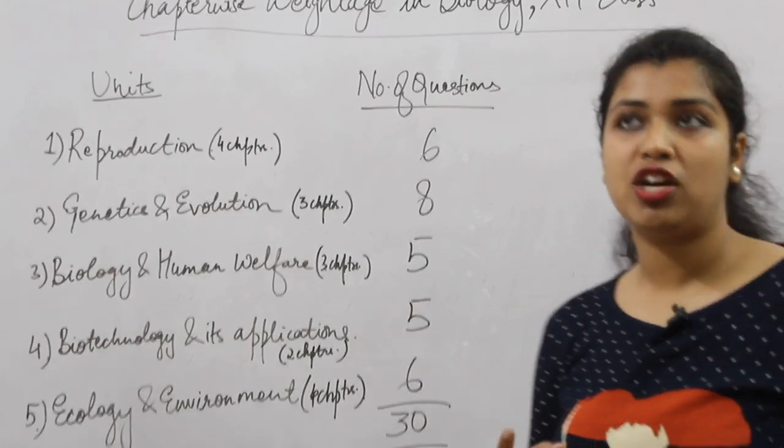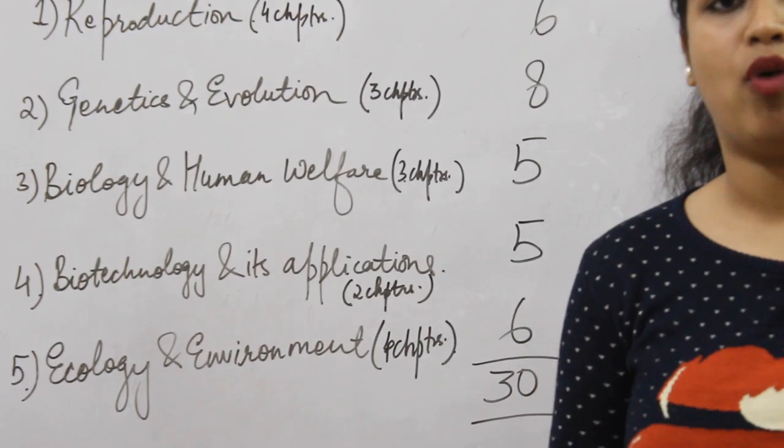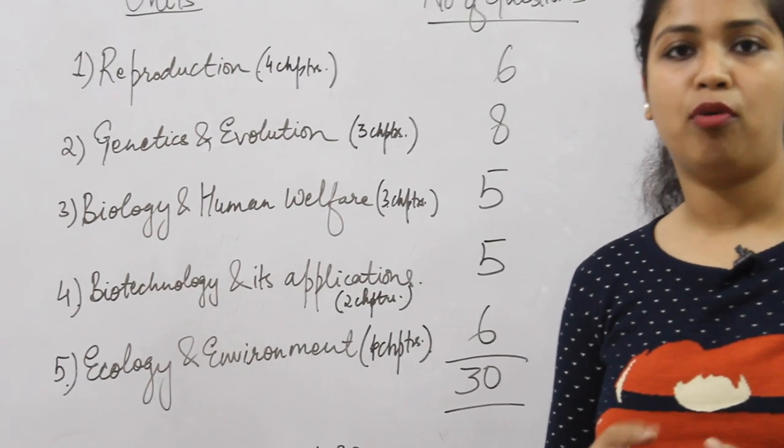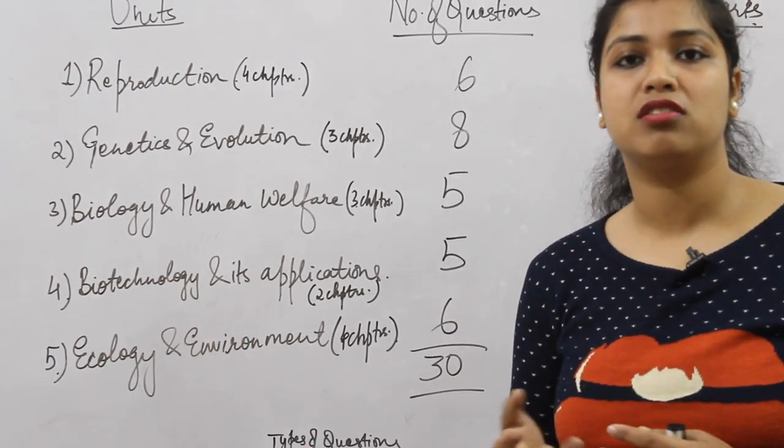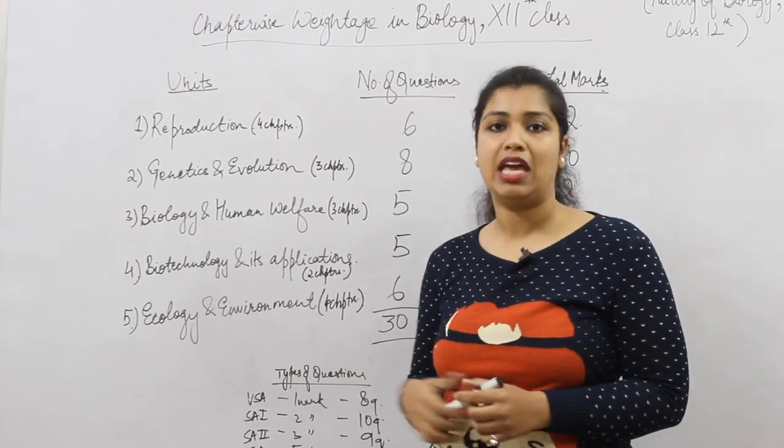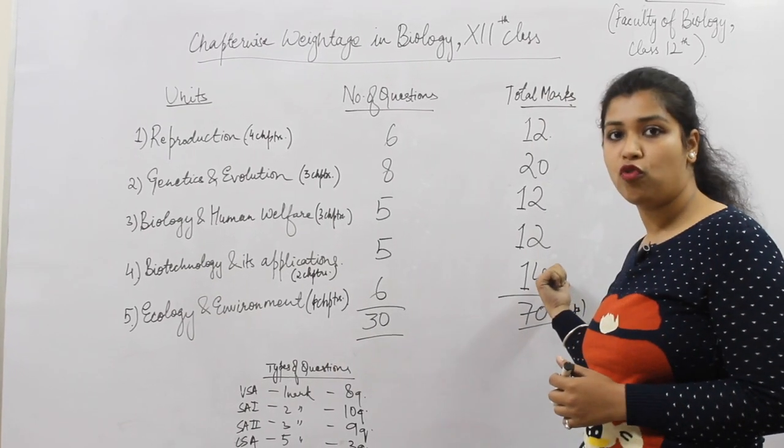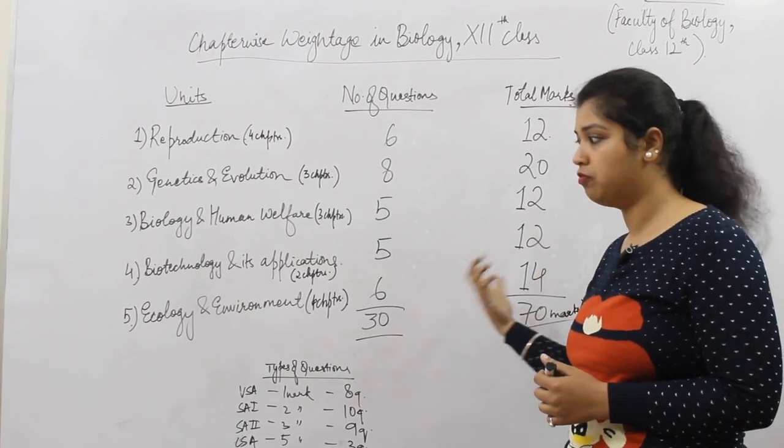Ecology and environment has two important chapters: ecosystems and organisms and its environment. These chapters hold 14 marks weightage.